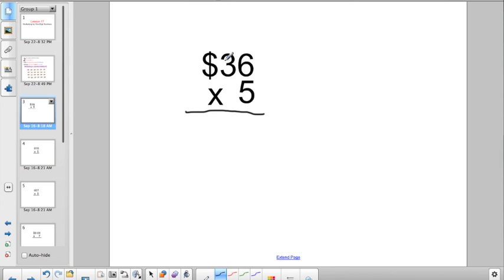But, the rules of carrying work the same, with one small exception. So, let's start. Six times five is thirty. You're multiplying everything by the bottom digit. Five times six is thirty. I have to write down my zero right below this column, and I'm going to go and put a plus three, just like when I am adding.